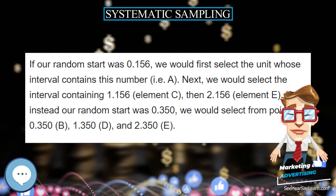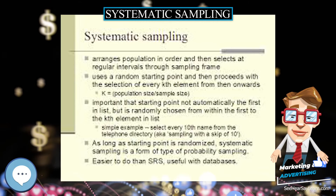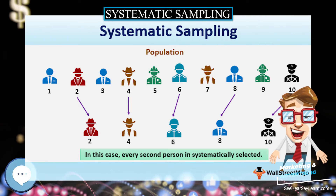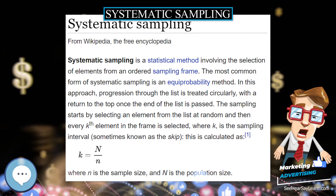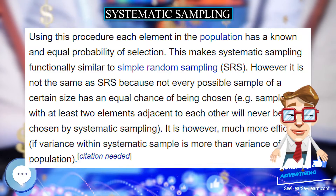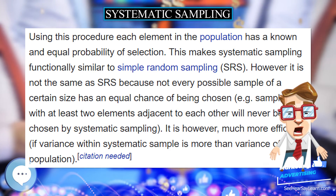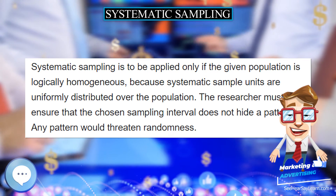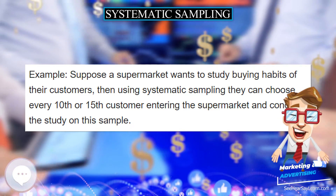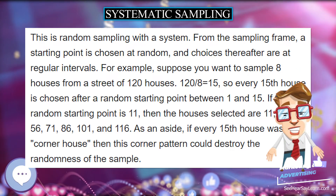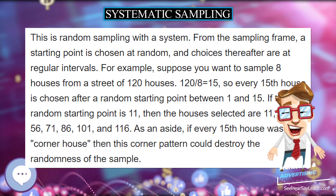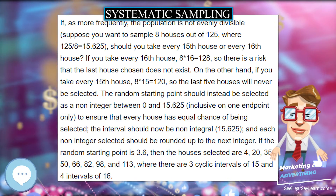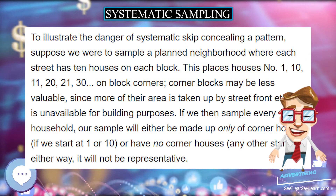To illustrate the danger of a systematic skip concealing a pattern, suppose we were to sample a planned neighborhood where each street has 10 houses on each block. The houses are numbered 1, 10, 11, 20, 21, 30, with corner blocks. Corner blocks may be less valuable since more of their area is taken up by street frontage that is unavailable for building purposes. If we then sample every 10th household, our sample will either be made up only of corner houses — if we start at 1 or 10 — or have no corner houses for any other start. Either way, it will not be representative.